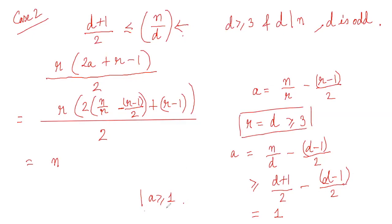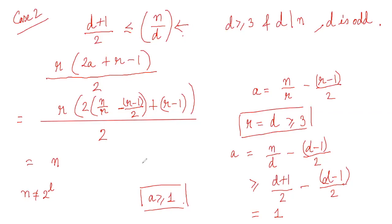We have proved that numbers n which cannot be written as 2 to the power l can be written as the sum of r consecutive positive integers.